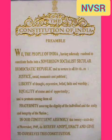Now we see the ingredients of the Preamble. The Preamble reveals four ingredients or components. First, the source of authority of the Constitution — the Preamble says that the Constitution derives its authority from the people of India. Second, the nature of the Indian State — it declares India to be a Sovereign, Socialist, Secular, Democratic and Republican polity.